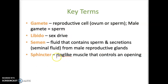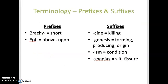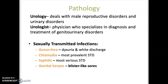A sphincter is a circular or ring-like muscle that opens and closes an opening. And these are just some combining forms, prefixes and suffixes related to this body system.